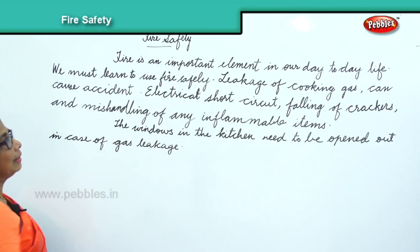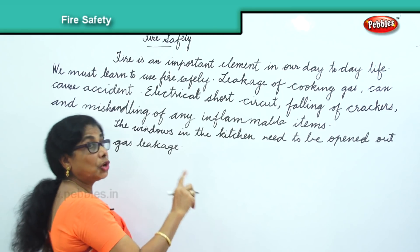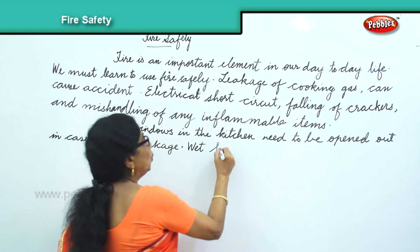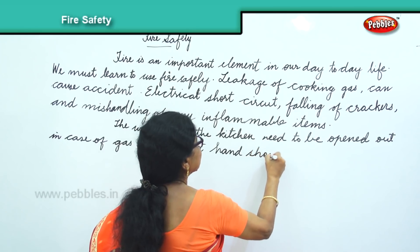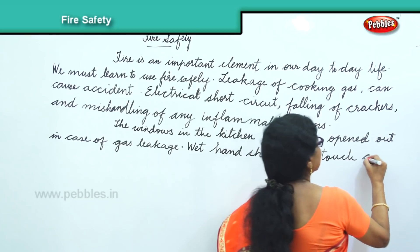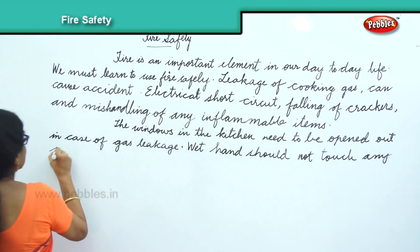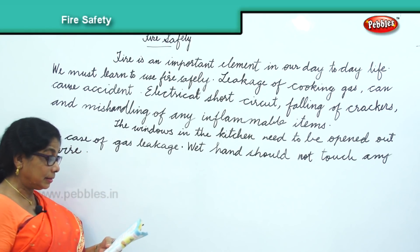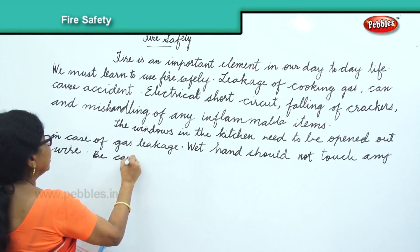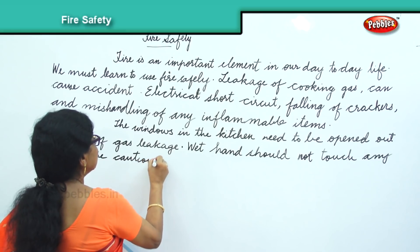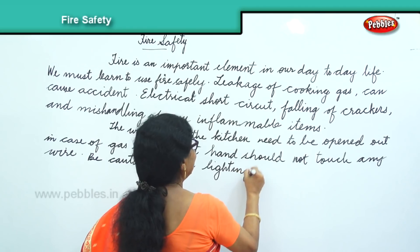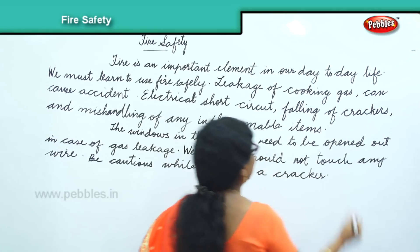For electrical safety, we must not touch wires with wet hands. Wet hands should not touch any wire. For falling of crackers, we need to be cautious while bursting crackers. Be very careful while lighting a cracker.